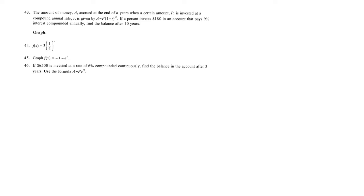Number 43, the amount of money A accrued at the end of N years when a certain amount P is invested at a compound annual rate is given by A equals P times 1 plus R to the N. If the person invests $180, that's P, at an account that pays 9%, 0.09 is your R, interest compounded annually, find the balance after 10 years, 10 is N.